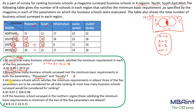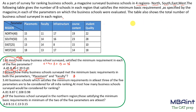Now question four: of the business schools surveyed in the northern region, those satisfying the minimum basic requirements in at least two of the five parameters — at least two means exactly two plus exactly three plus exactly four plus exactly five. We need to find the minimum value of this complete term.